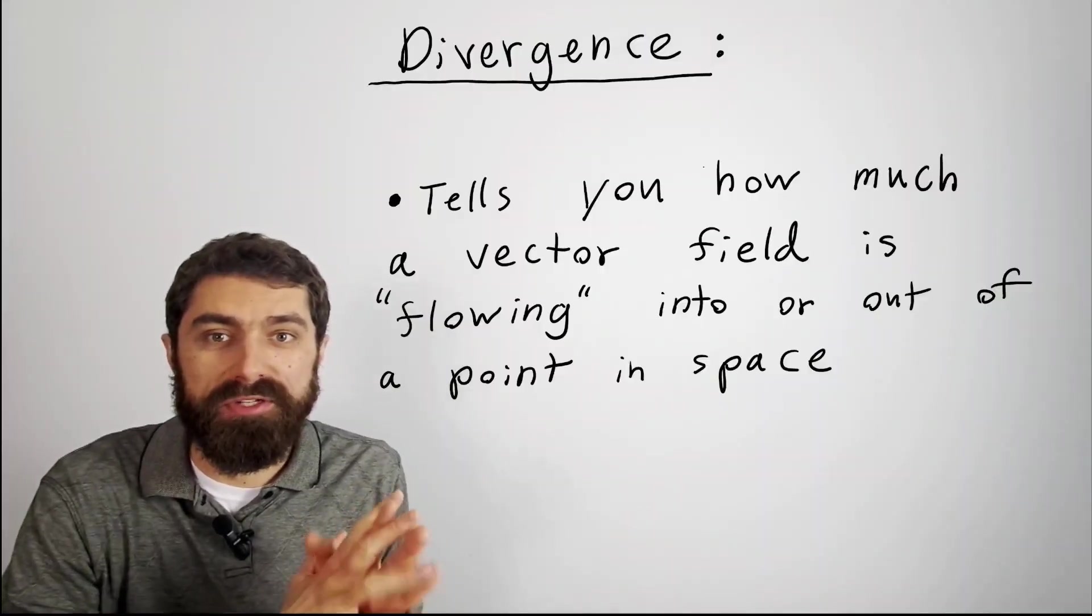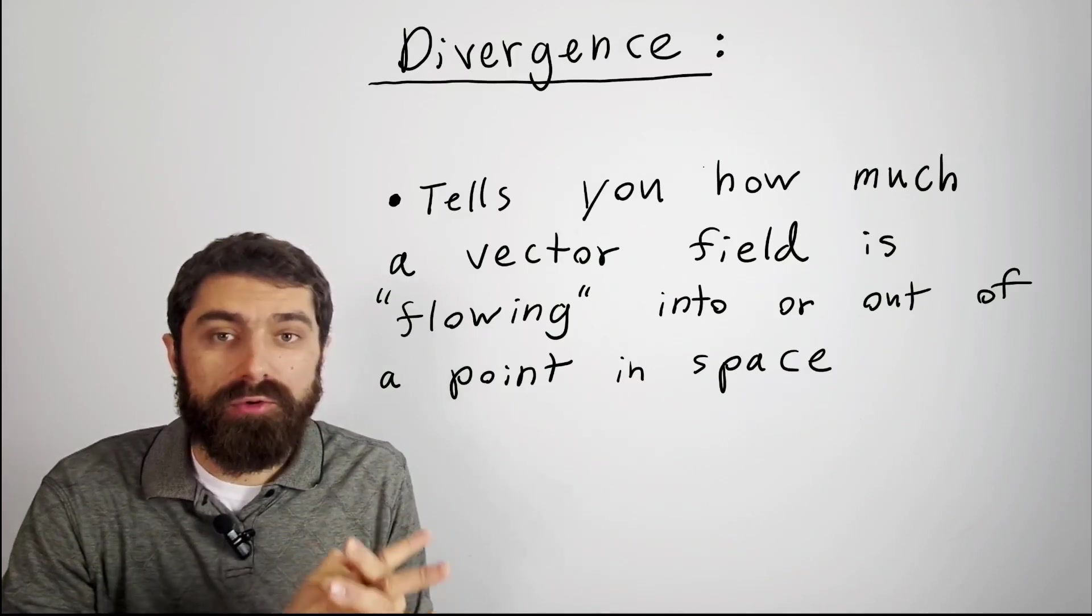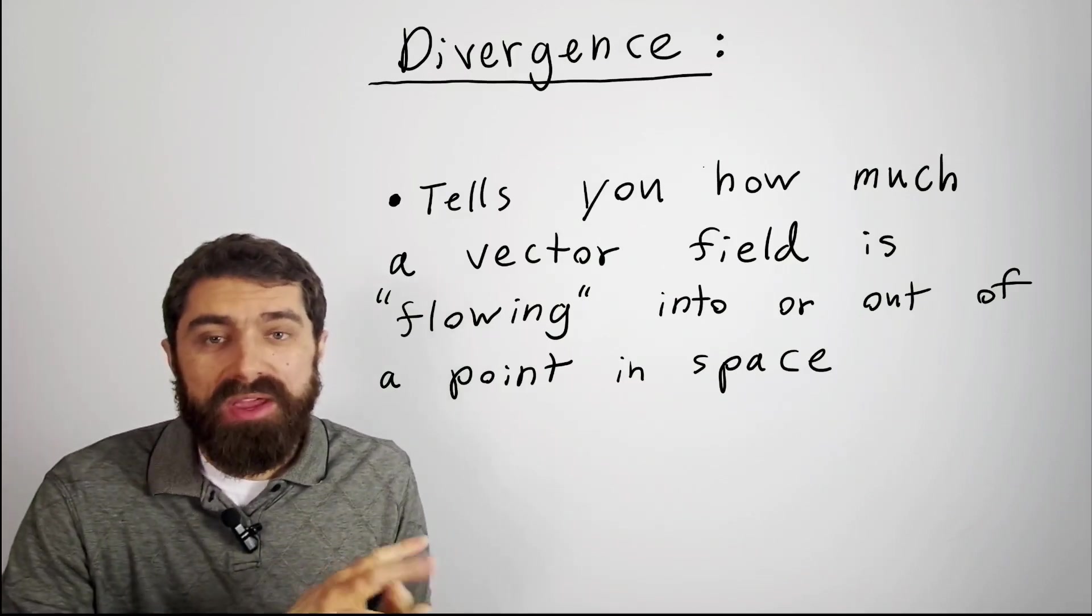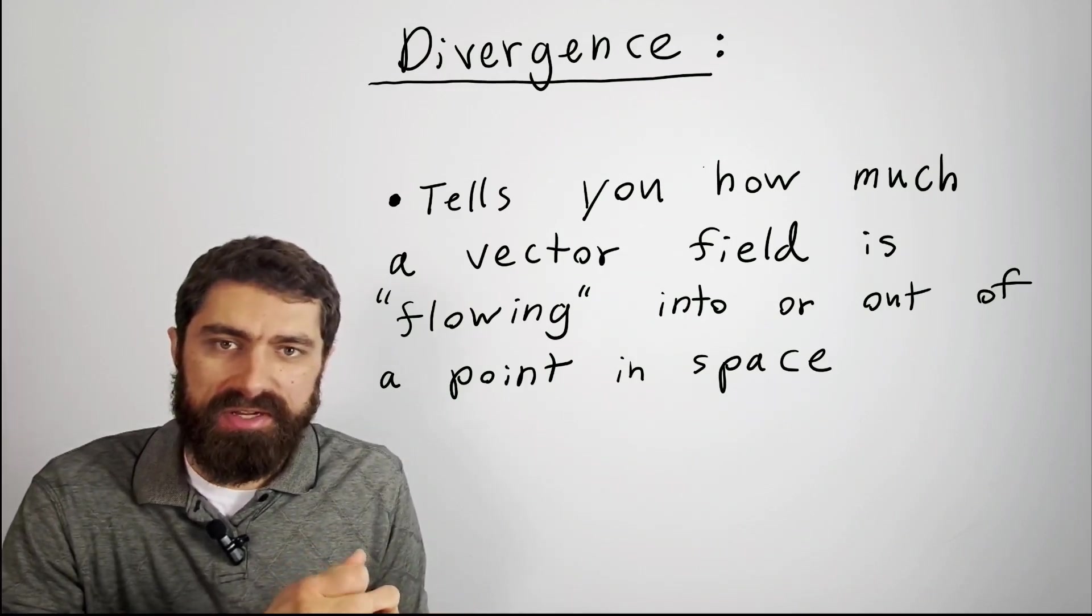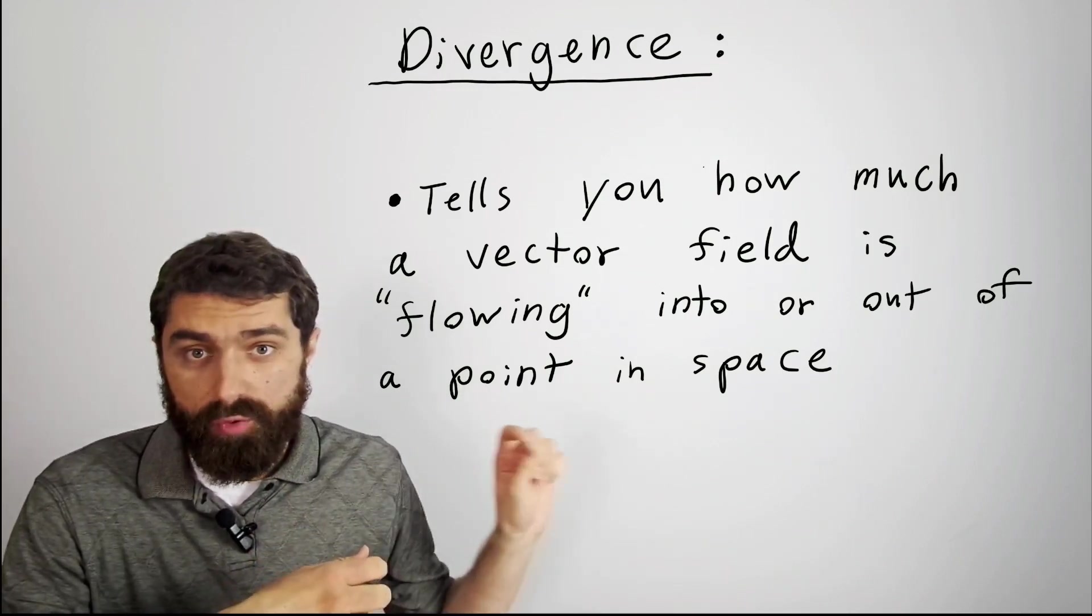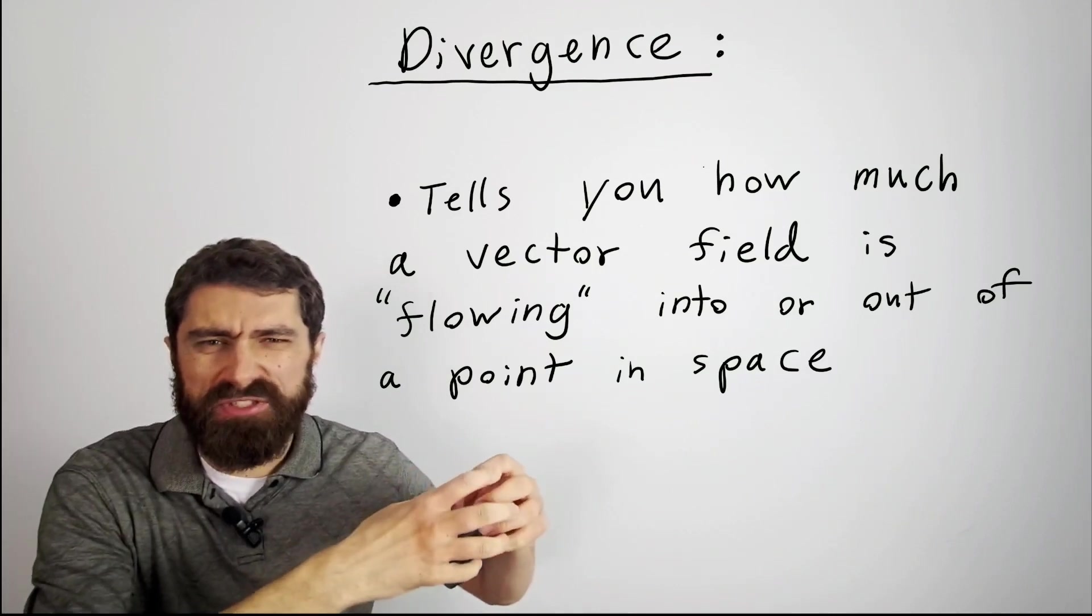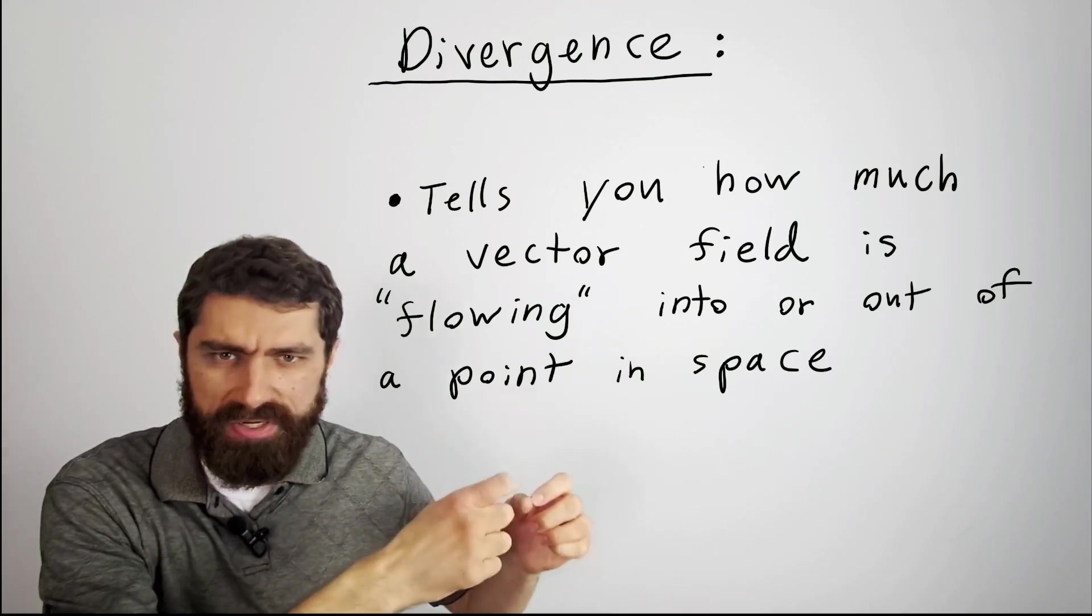In this video, we're going to be talking about divergence. It's another really cool quantity that you can calculate with the del operator. The divergence of a vector field at a point in space tells you how much the vector field is either flowing into or out of that particular point.